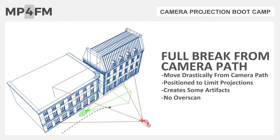When breaking from the camera path, your projection camera is slightly altered from the shot camera — a tilt, pan, or translate — but you're still roughly seeing what the shot camera would see. You lose the benefit of placing your plate directly in the matte painting, but you gain the benefit of not needing as many projection cameras. A variation is a full break from the camera path, where the projection camera isn't even close to where the shot camera is. The benefit is great coverage; the drawback is you don't really know what the shot looks like until you render it through the shot camera. For these cameras, there is no overscan, since overscan is a function of basing off the shot camera.